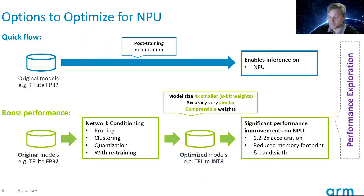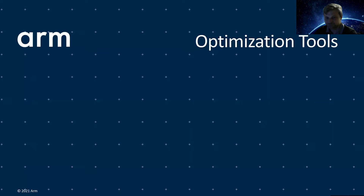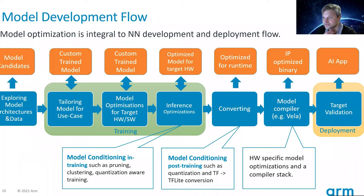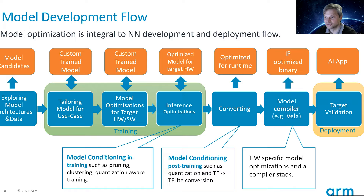To achieve this, the tooling becomes important. I wanted to recap how the model development flow looks from our point of view. Typically, people start by identifying the use case and potential model candidates — not everyone designs a brand new architecture; very often they reuse existing ones. It's a matter of choosing an architecture appropriate for the use case. Then they tailor that model for their specific use case by selecting or building their own dataset, and may retrain the model — for example, reducing the number of classes on an image classification network or supporting fewer or more objects than the original network for an object detection network.